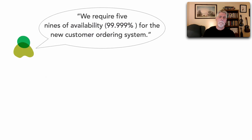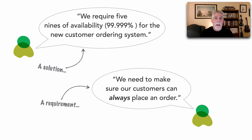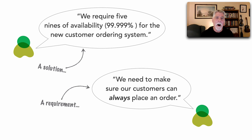Let's analyze these two so-called requirements. The product team says, "We require five nines of availability for the new customer ordering system." But when we asked why, it turned out this is really a solution. The actual requirement was: we need to make sure our customers can always place an order. This happens to us all the time. We receive requirements from the product team and customers, but it's our job as architects to dig deeper — especially if something doesn't seem feasible — and really find out why a certain thing is needed. That "why" question, continually drilling down, uncovers the true requirements that make a solution feasible.